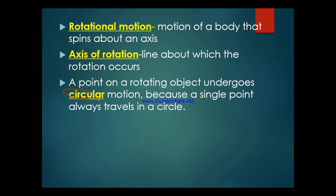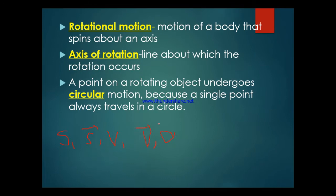When you define a circle, it has a distance from the center to any point on the circle that we call radius. Now, as we have learned from rectilinear motion, we have defined terms like distance, displacement, speed, velocity, and acceleration. In a similar manner, we are going to define such physical quantities for rotational motion as well.